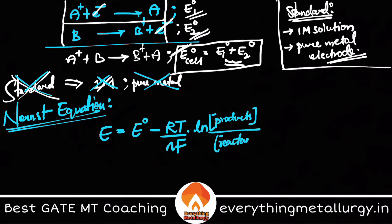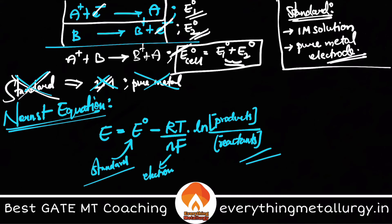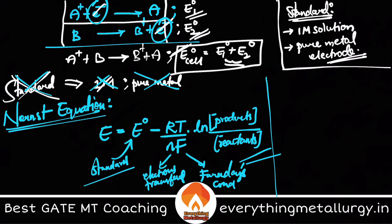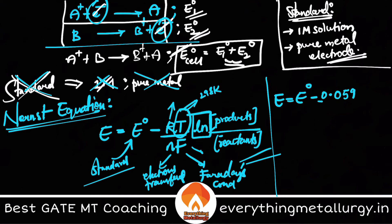The Nernst equation gives: E = E° − (RT/nF) × ln([products]/[reactants]), where E° is the standard cell potential, R is the universal gas constant, T is temperature, n is the number of electrons transferred, and F is Faraday's constant. At room temperature (298 K), converting ln to log by multiplying by 2.303 and substituting R = 8.314 and F = 96500, this simplifies to: E = E° − (0.059/n) × log([products]/[reactants]).